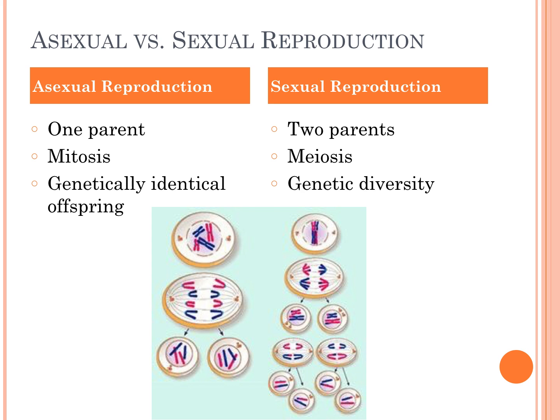The differences between asexual and sexual: asexual reproduction is by one parent, done through mitosis, and produces genetically identical offspring. Sexual reproduction, on the other hand, is by two parents, occurs through meiosis, and produces genetic diversity. On the left is mitosis producing two genetically identical daughter cells; on the right, meiosis produces four haploid daughter cells that are genetically different.